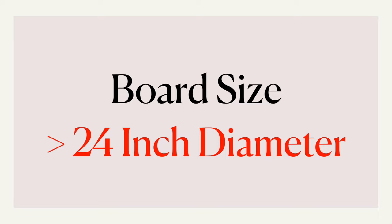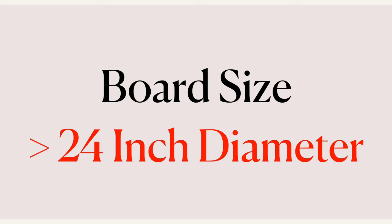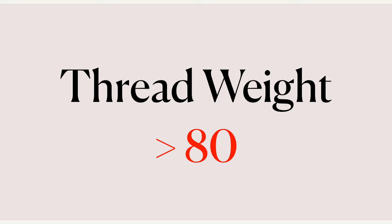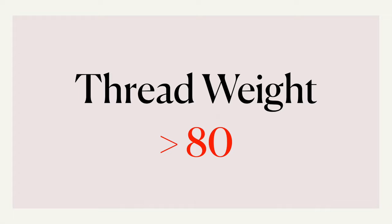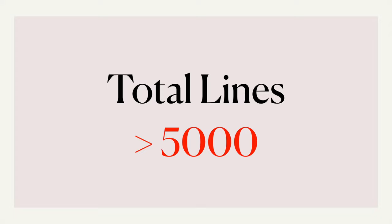The next consideration is board size. This portrait was made on a 100 centimeter diameter board, but you can also make a similar portrait on a 24 inch diameter board. Your thread weight cannot be less than 80 — the lesser the weight, the thicker the thread, so working with even higher weight threads is better. Finally, by running experiments on different algorithms, I know the minimum number of lines required is 5,000 through my program.